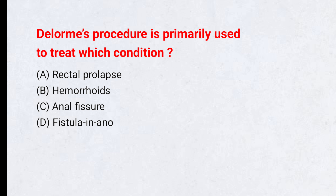Delormis procedure is primarily used to treat which condition? A. Rectal prolapse. B. Hemorrhoids. C. Anal fissure. D. Fistula-in-ano. Correct answer: A.